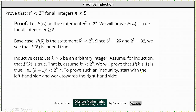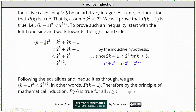To prove such an inequality, we start with the left-hand side and work towards the right side. The square of the quantity k plus 1 is equal to two factors of k plus 1, which if we multiply out is equal to k squared plus 2k plus 1. From here, we perform a substitution using the inequality k squared is less than 2 to the power of k, which means if we substitute 2 to the power of k for k squared, k squared plus 2k plus 1 is less than 2 to the power of k plus 2k plus 1.